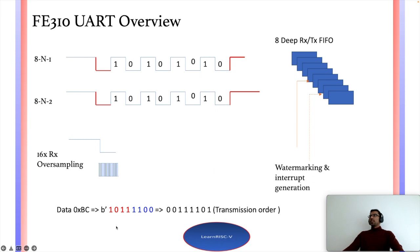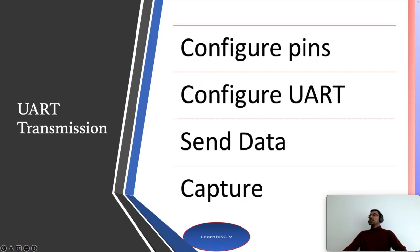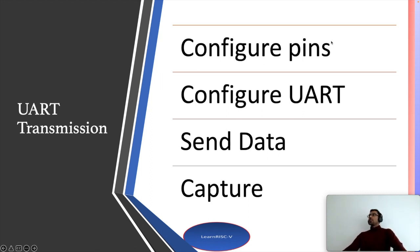The data transmission order is LSB first — the least significant bit is transmitted first. So for a byte like 0xBC, the bits would be sent as two zeros followed by four ones and then 01. The next few minutes will cover configuring the pins, configuring the UART, transmitting data, and capturing it on the scope.